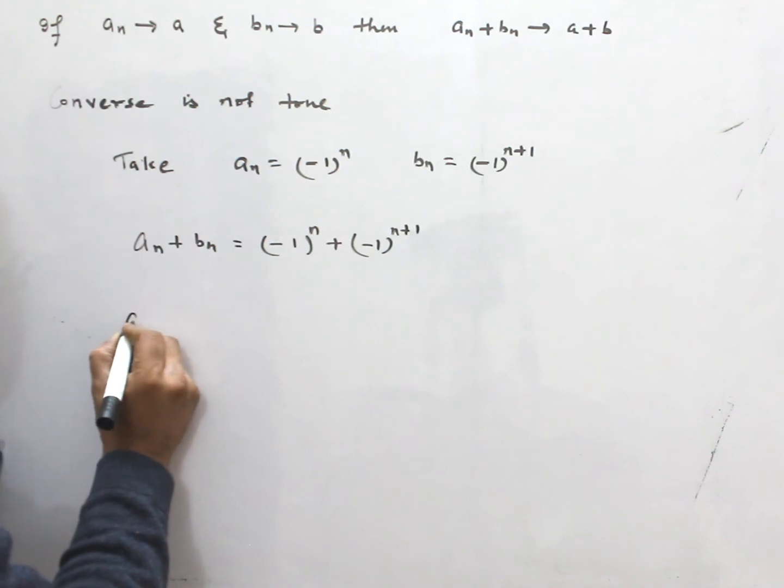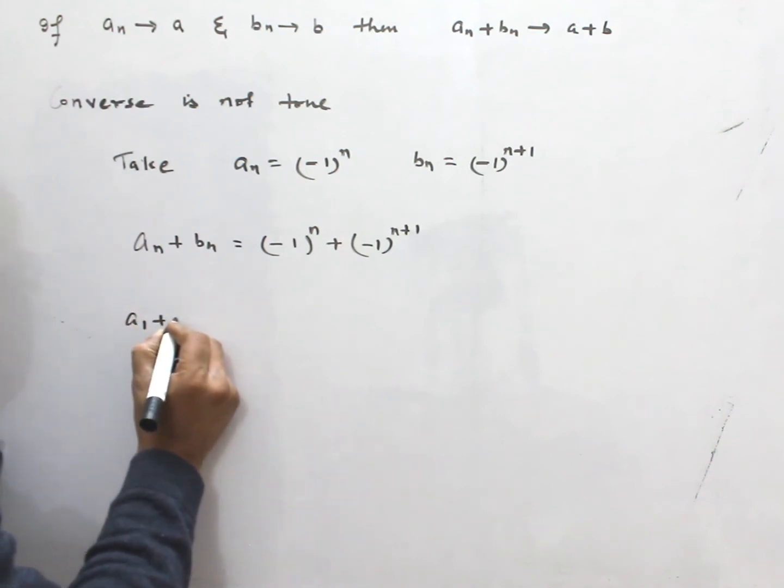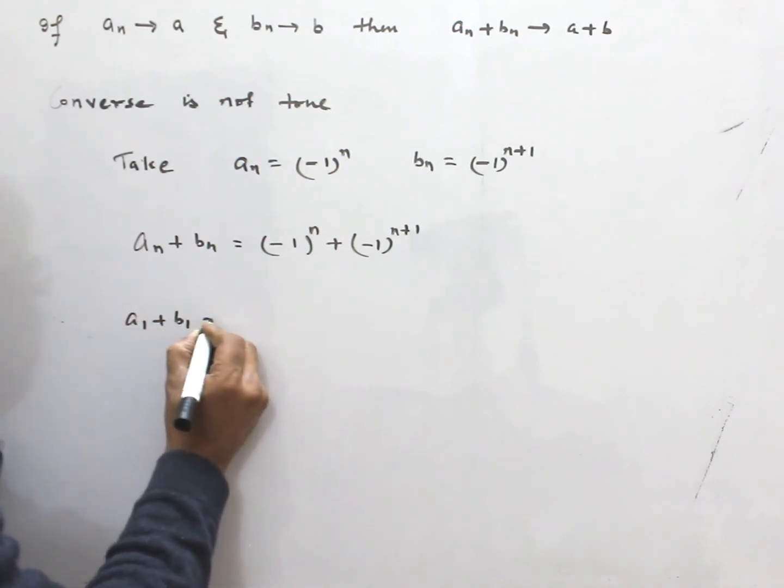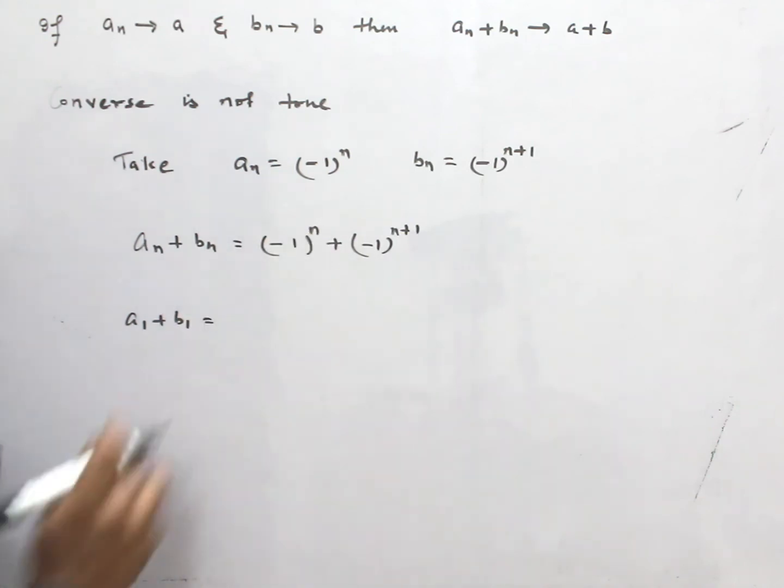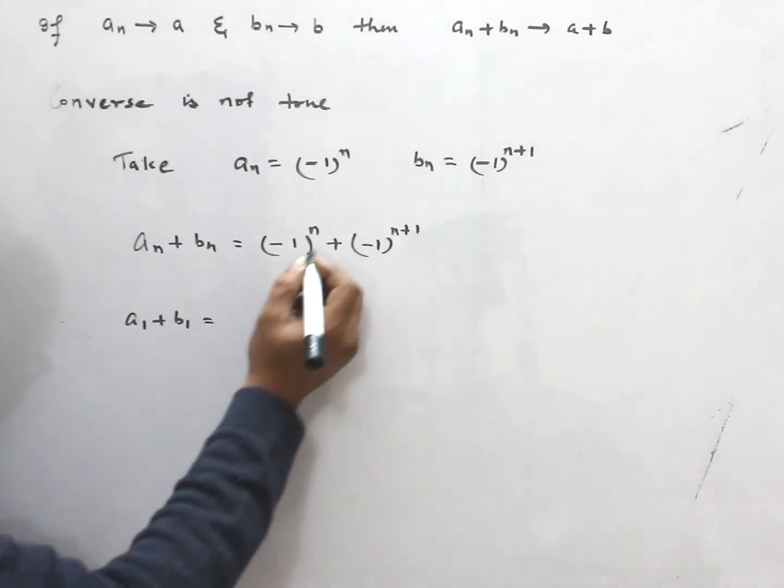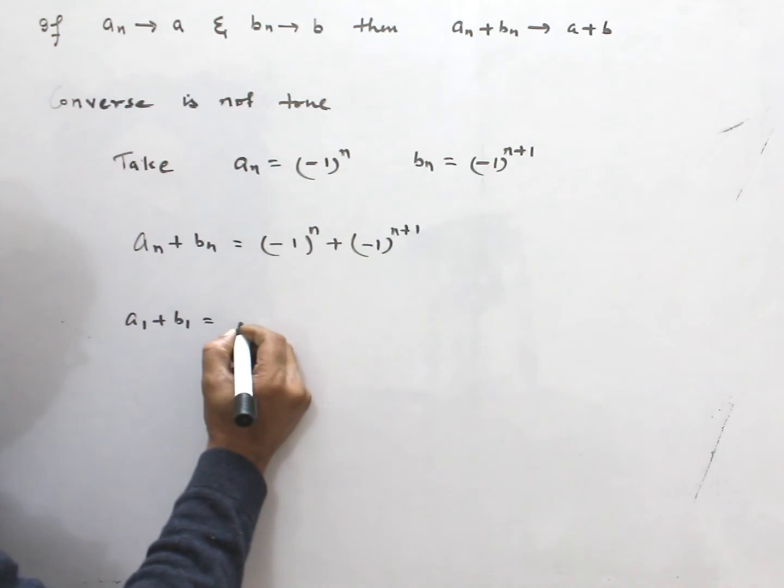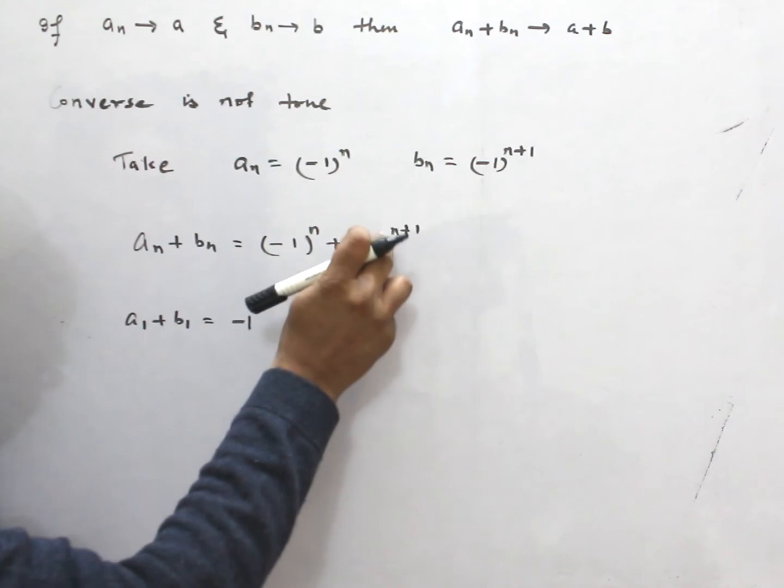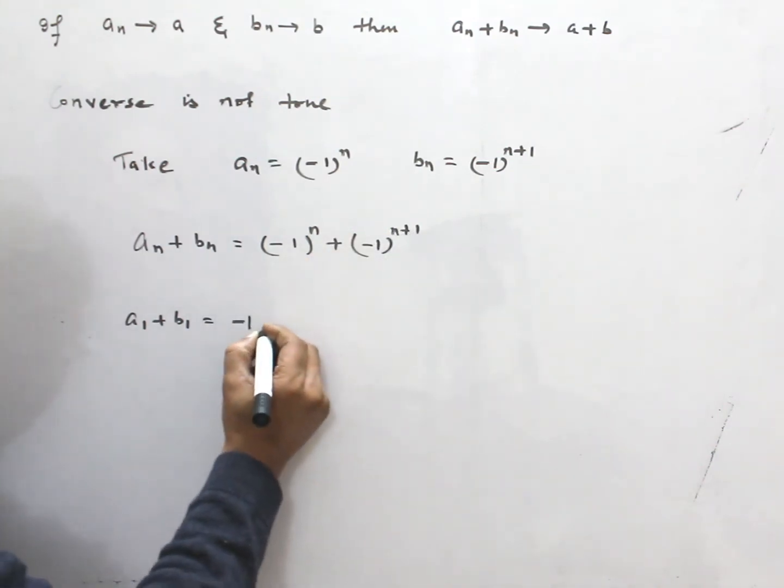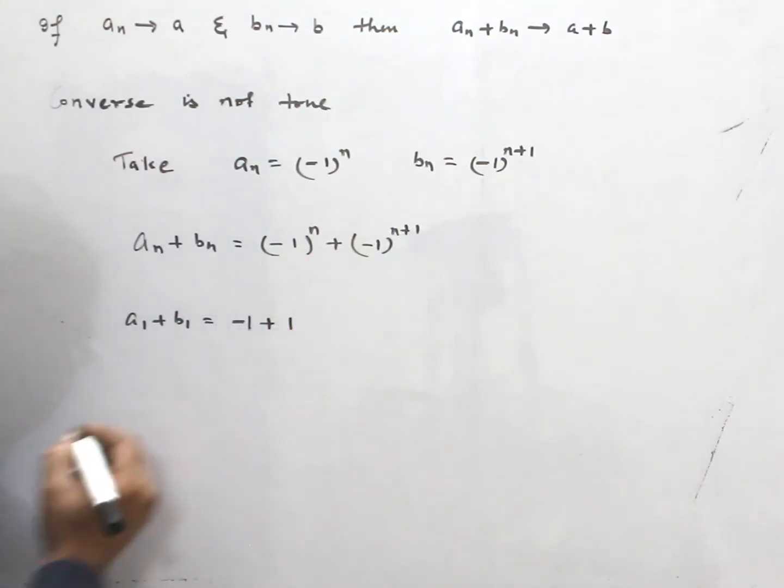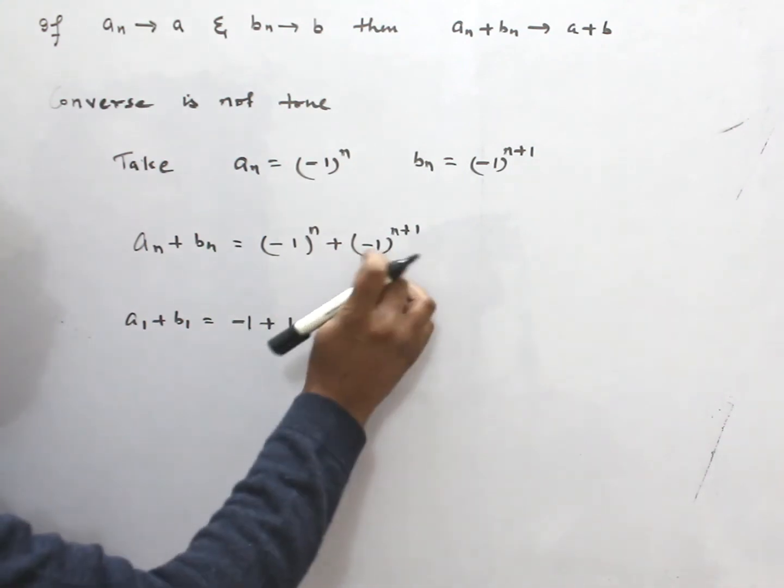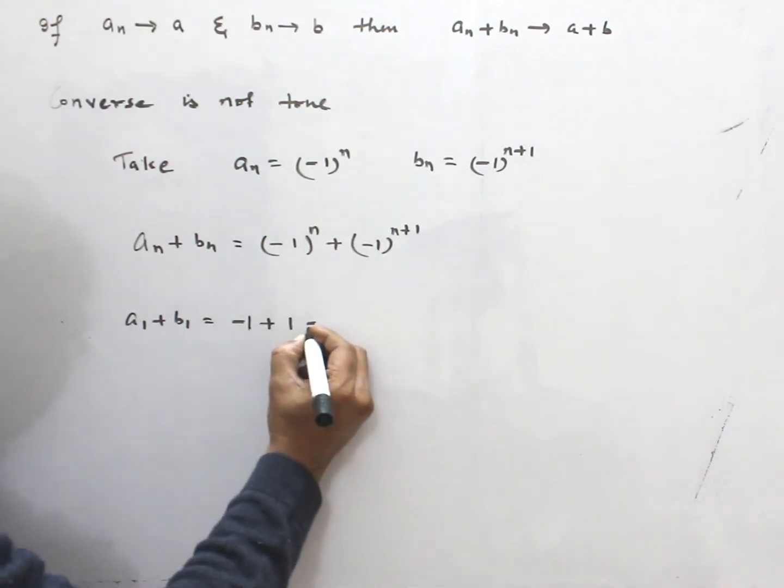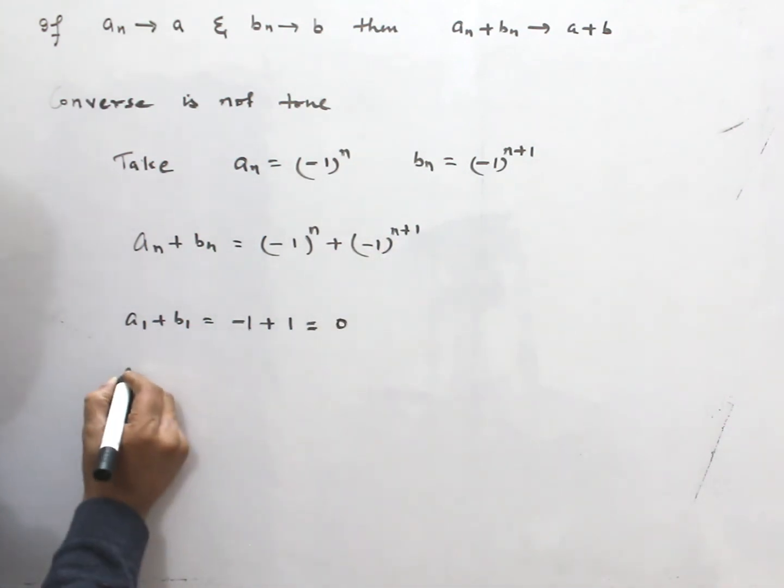An + Bn = (-1)^n + (-1)^(n+1). So, here you can see A1 + B1, if I take N = 1, I get this is -1. And if I put N = 1, then this I get 1. So, because it is the even power, I get 0.